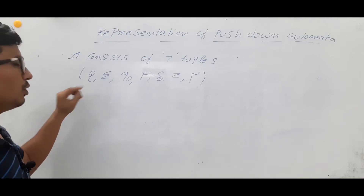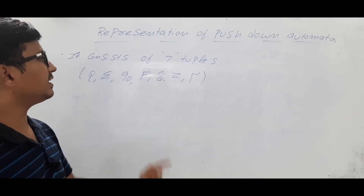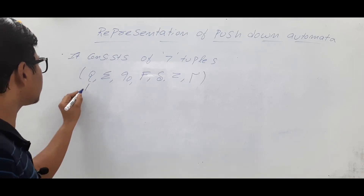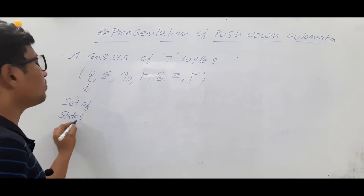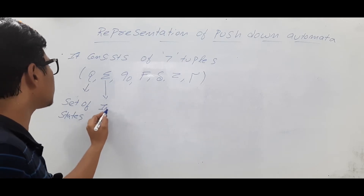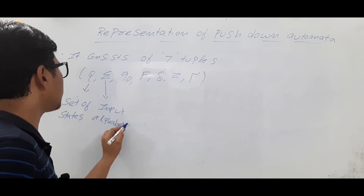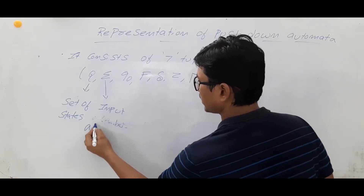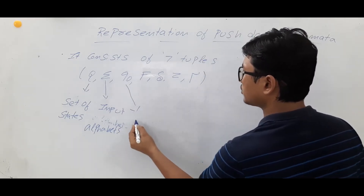The seven tuples are Q, Sigma, Q-naught, F, Delta, Z, and Tau. Q is used to represent the set of states in the pushdown automata. Sigma is used to represent input alphabets — with the help of input alphabets only we can generate a language.